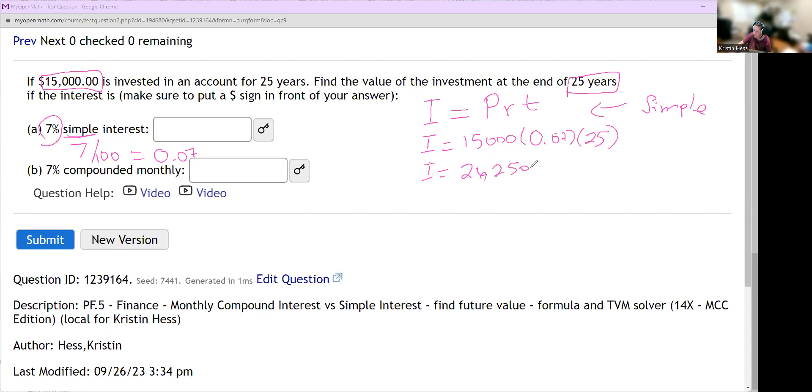The question's asking for find the value of the investment at the end of 25 years. So we want the future value. So the future value is just what you started with, your present value, plus the interest that you earned. That's all it is. So we started with $15,000. We earned 26,250.